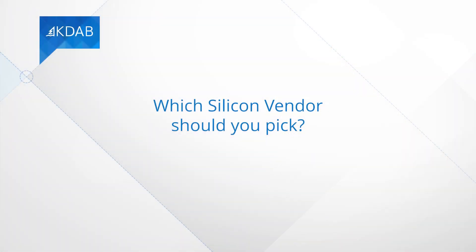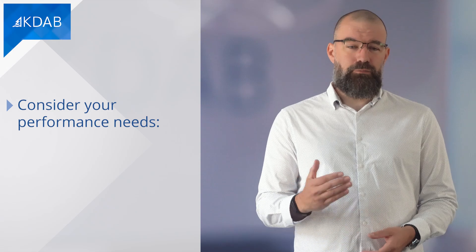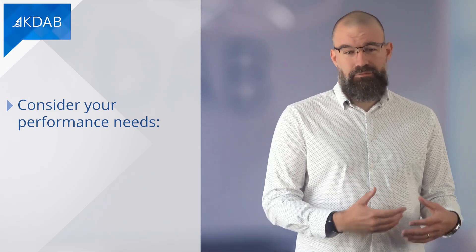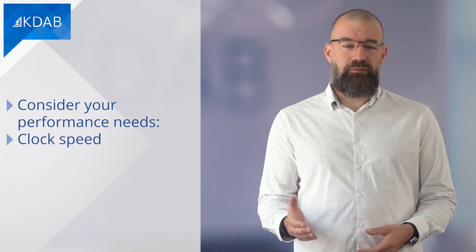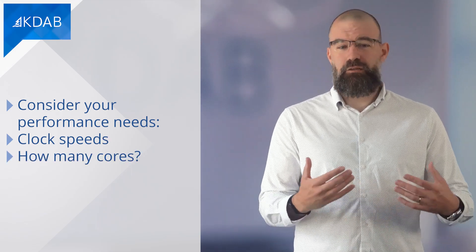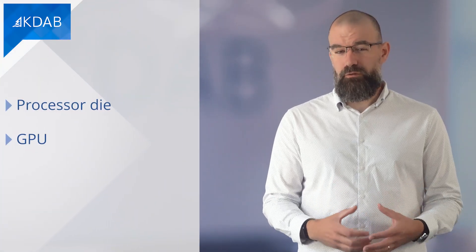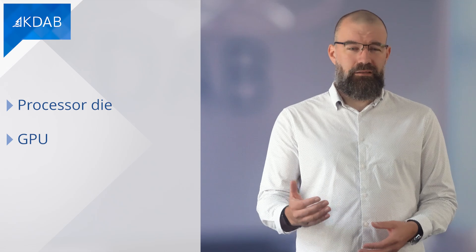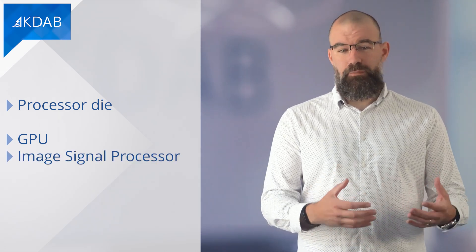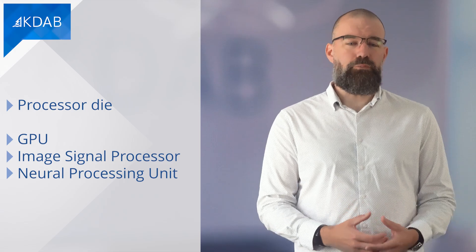So which silicon vendor should you pick? Unfortunately, there's no universal right answer here. You are going to have to consider your performance needs, and from a CPU point of view, what clock speeds might you need and how many cores do you expect to use? The processor die for embedded devices often also contains the GPU and other specialized processors, such as an image signal processor or neural processing unit. If your product needs something specialized, that can significantly cut down the range of devices you have to choose from.